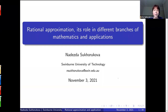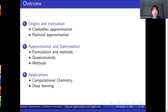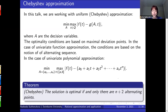The problems are quite interesting. So what I will be talking about: first, a little bit about the motivation — why rational approximation — then connections between approximation and optimization, and at the end, applications. One application is in computational chemistry, and another relates to deep learning, though there are actually several applications in deep learning. Let's see how much we can cover today.